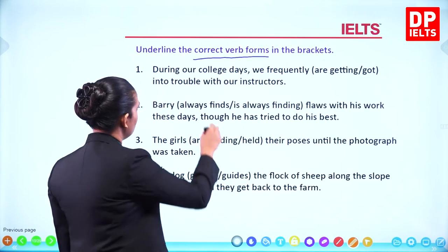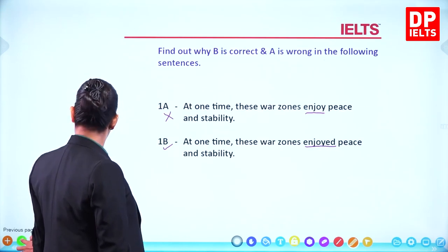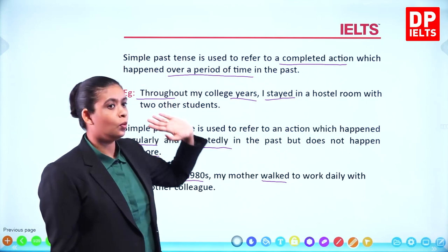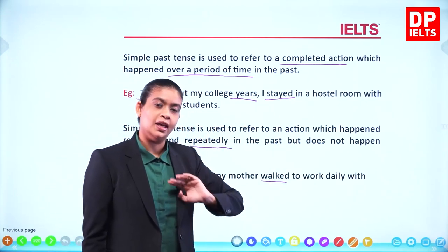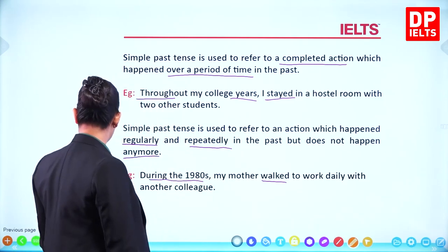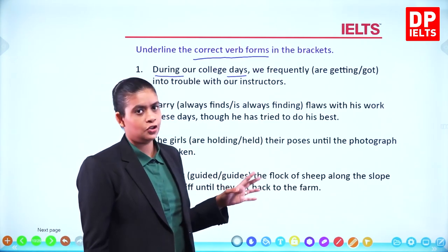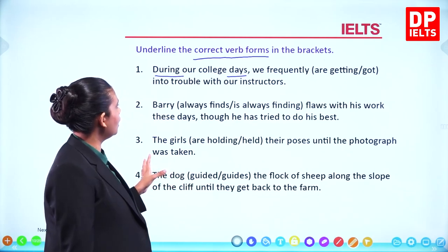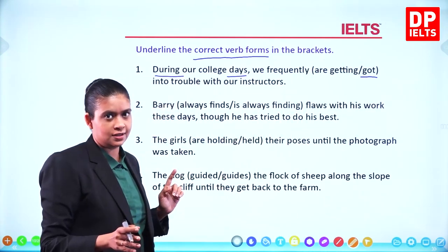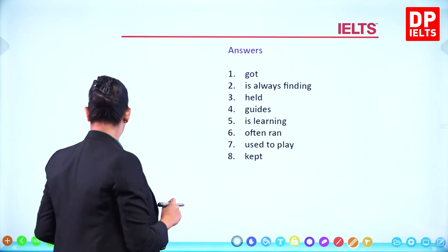'During our college days' is like 'throughout my college years' — it was a completed action over a period of time. If that is the case, the verb must be in the simple past tense. So: 'During our college days, we frequently got into trouble with our instructors.' The answer is 'got.'